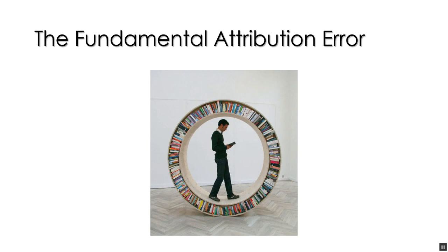Over the years of teaching research methods, I realized that teaching it totally content-free isn't really going to help students. As a professor, I have experience with many different content areas that serve as a backdrop to understanding the processes we're talking about in research methods. But I know to students it may not be that clear. So I'm going to briefly touch on one theory and one phenomenon in psychology — the fundamental attribution error — and use it as a backdrop for the course.